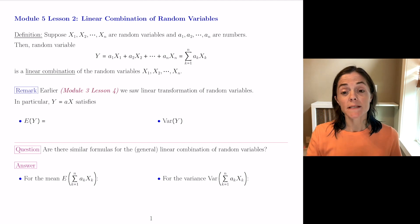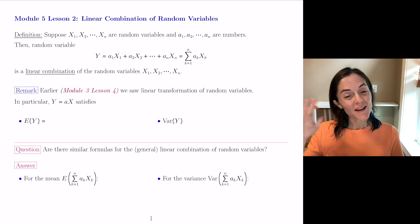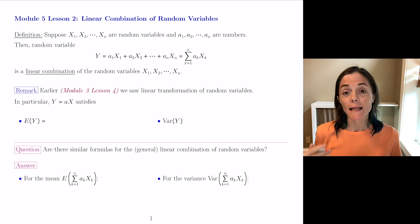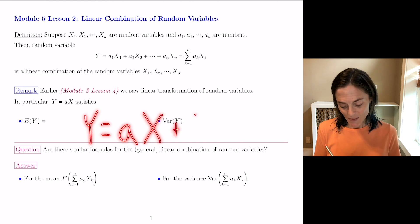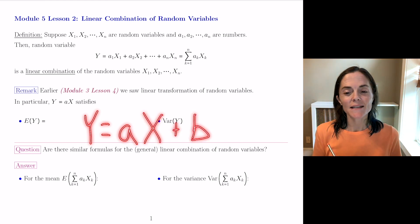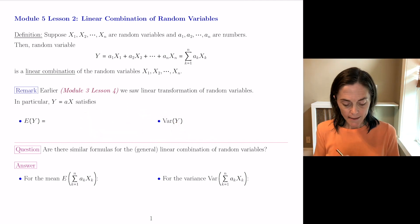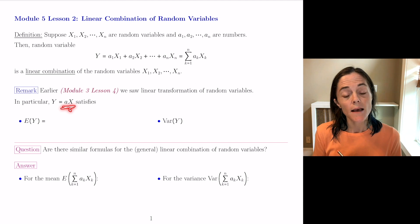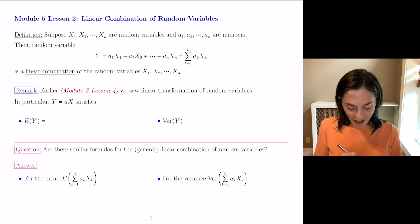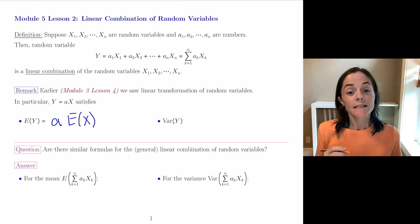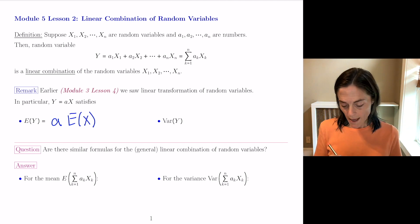We have seen a special case of this. In module 3, lesson 4, we looked at linear transformation of a random variable — things like ax plus b. To match the above definition, the b has to be 0, so y is just ax. This is a linear combination where n equals 1. We had formulas: the expected value of y was a times the expected value of x, and similarly, the variance of y was a squared times the variance of x.